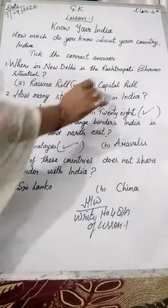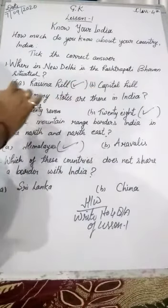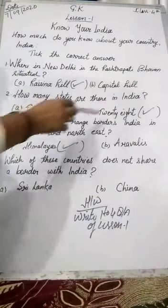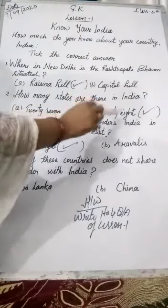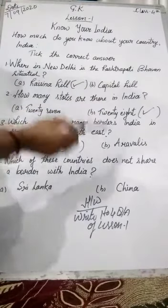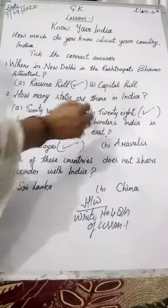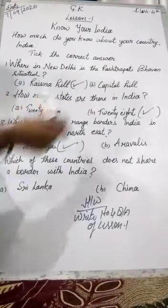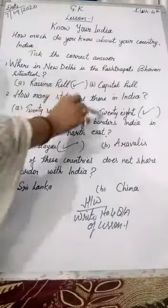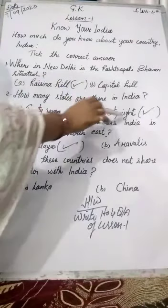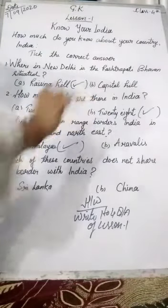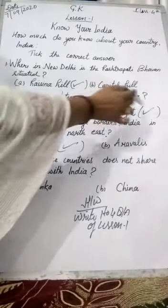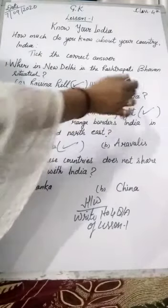Second question: how many states are there in India? The answer was 29, but in 2019, Jammu Kashmir, which was a state, became a union territory. That's why the number of states decreased. Now in 2020, there are 28 states, because Jammu Kashmir is now a union territory.